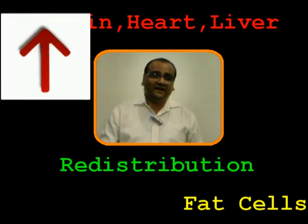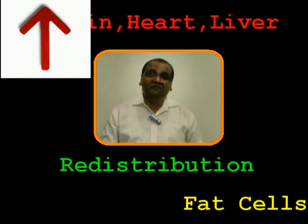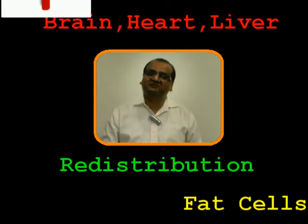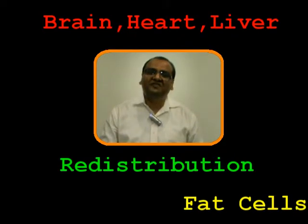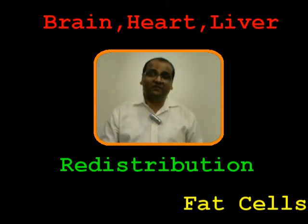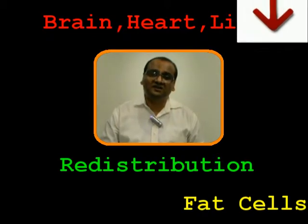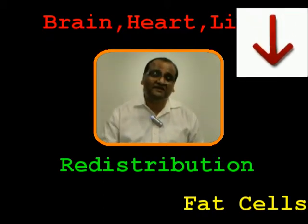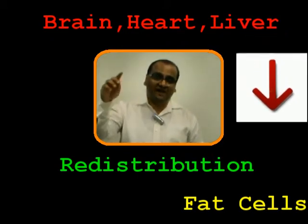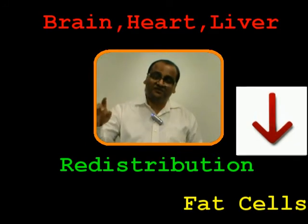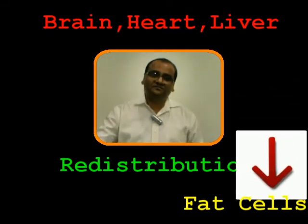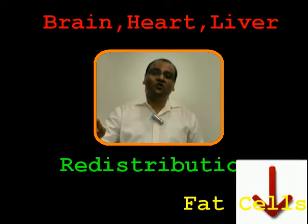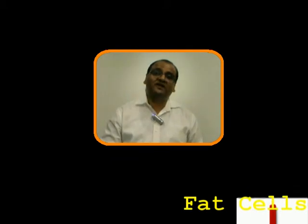Usually these drugs will get accumulated or distributed within these highly perfused organs first. But later on, as they are lipid soluble drugs, their concentration will fall within these organs and they will move toward more bulky tissues like fat cells. So there's an initial phase where they distribute themselves in the organs with high perfusion, but later on they tend to settle within the fat tissues and other bulky tissues of the body. This is the concept of redistribution of drugs.